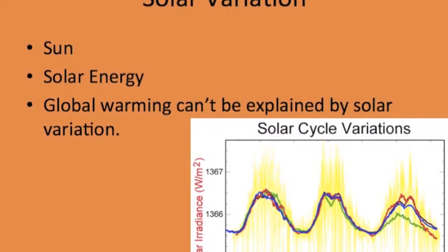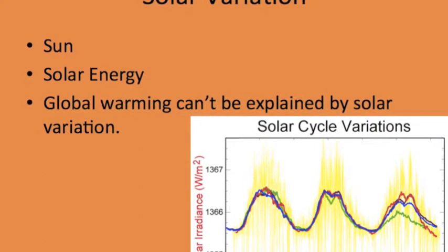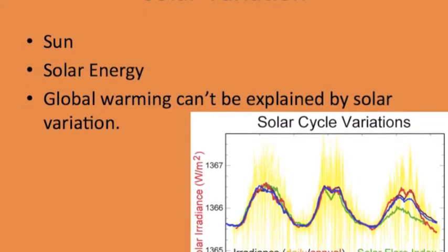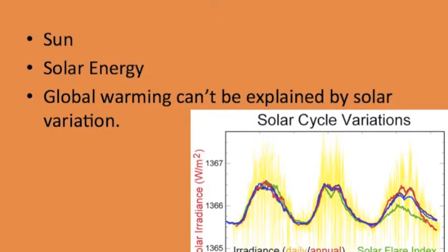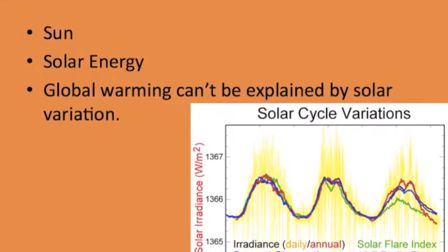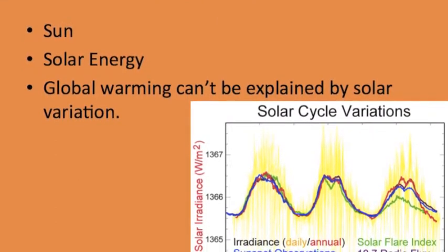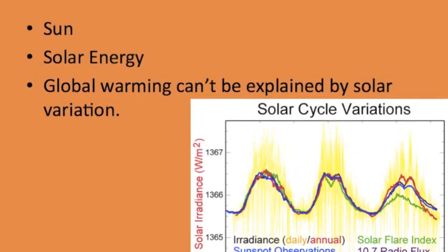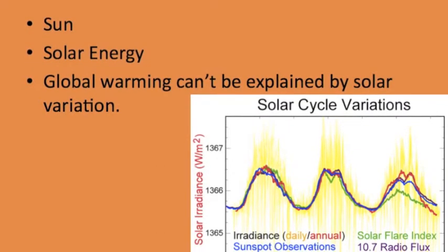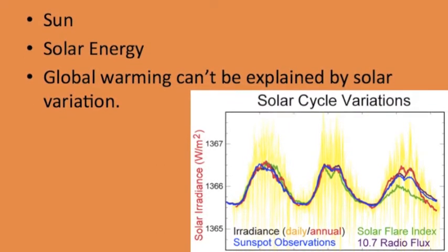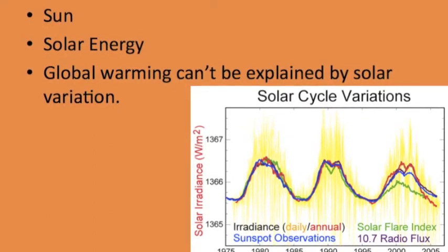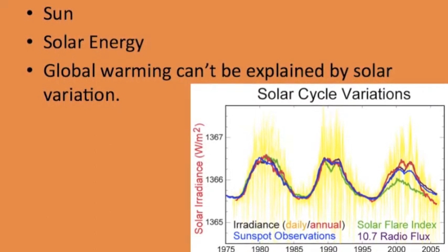For instance, a decrease in solar activity has been thought to have triggered the little ice age between 1650 and 1850, when Greenland was largely cut off by ice from 1410 to the 1720s, and glaciers advanced in the Alps.